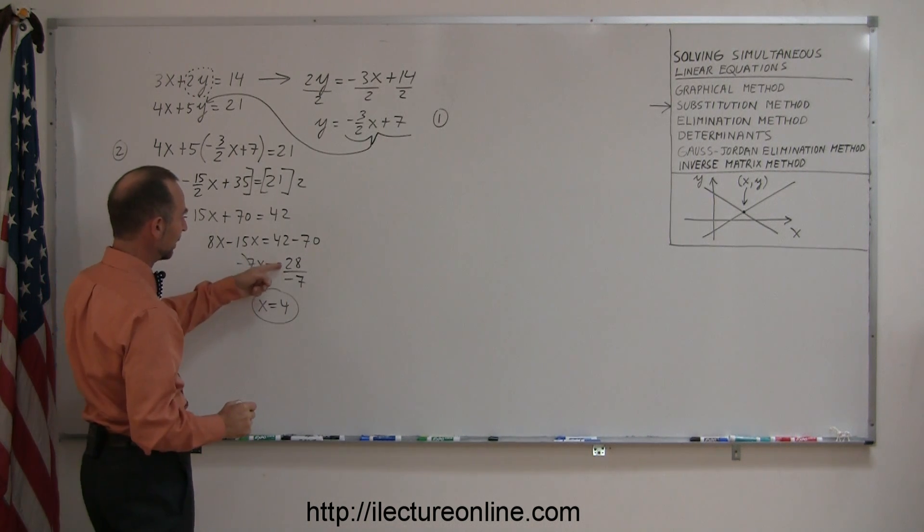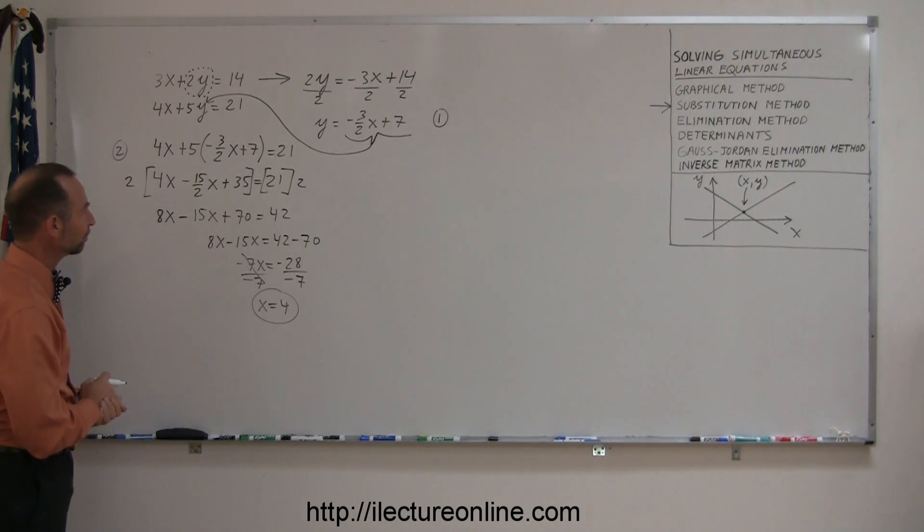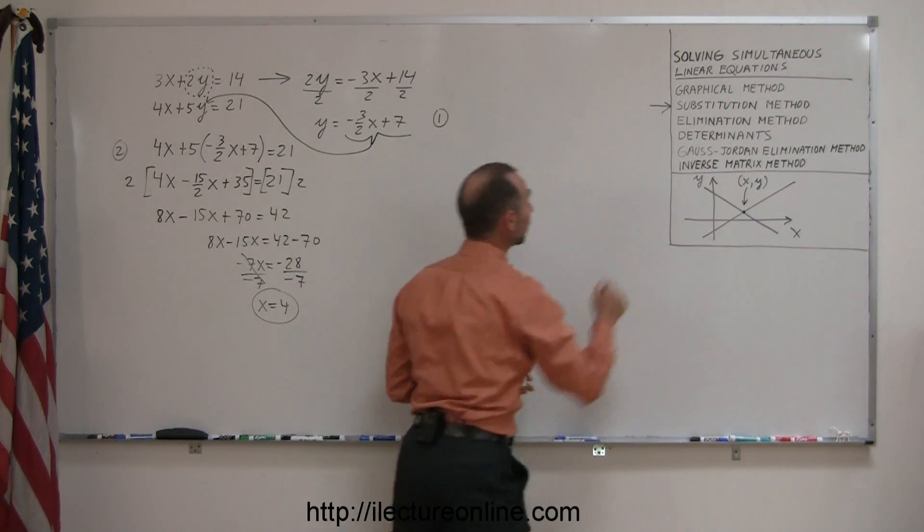Remember, when you divide a negative number by negative number, you get a positive number. I now found the value for x. That's the x-coordinate where the two lines cross.